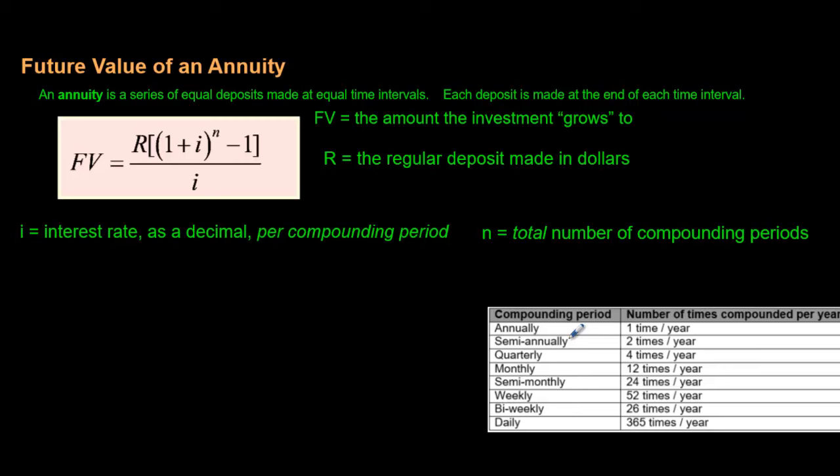Hey everybody, how's it going? Here we are with another math video. This one's talking about the future value of an annuity. That word is kind of a strange word. Right below it here is a definition of what that word is. An annuity is a series of equal deposits made at equal time intervals. Each deposit is made at the end of each time interval.